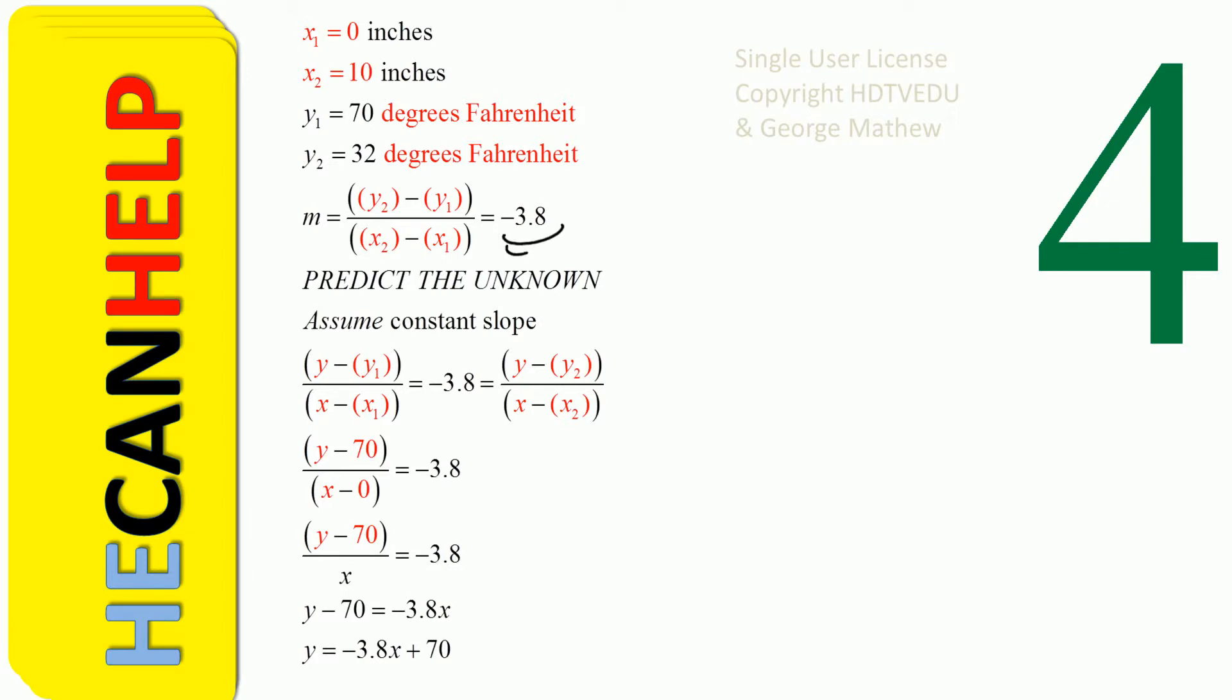We have the slope, negative 3.8. And now the question is this: do we draw the line like this, A, or do we draw the line like this, B? Do not forget, when we go from left to right, what happens to the temperature? The temperature falls, so we choose B. Our slope is negative because when we go from left to right, our temperature should fall.